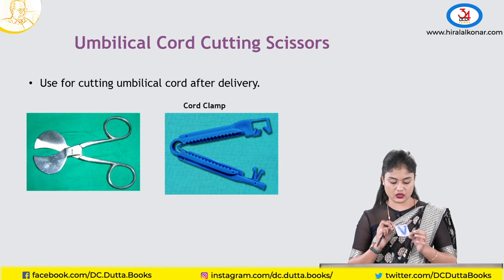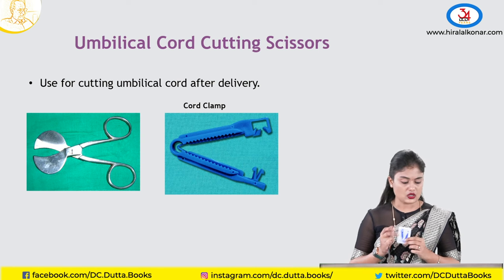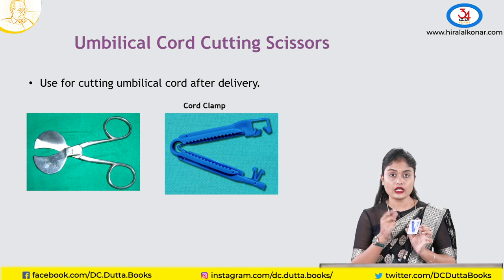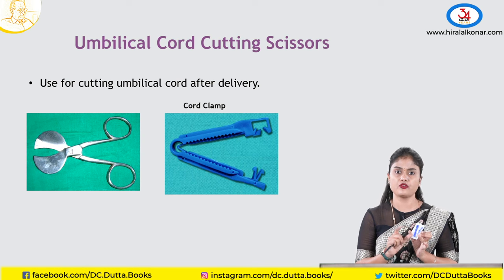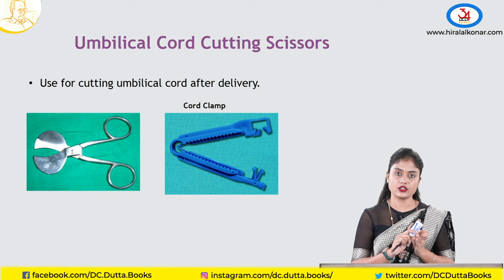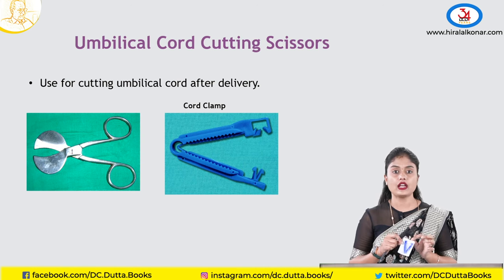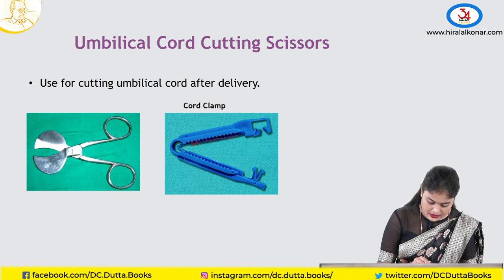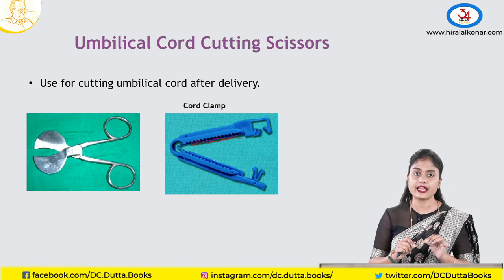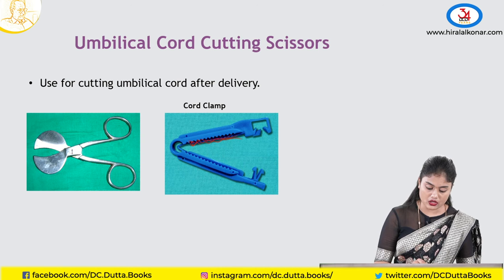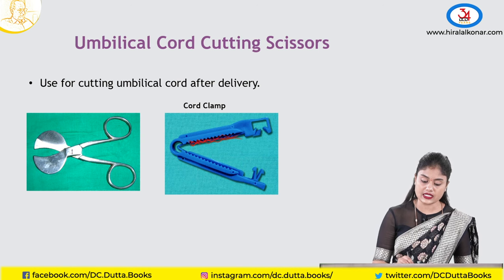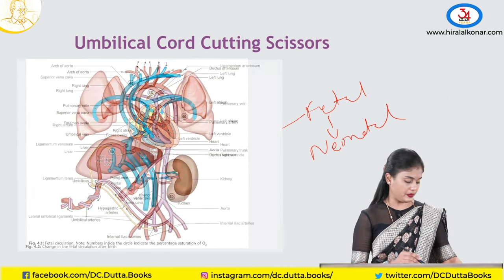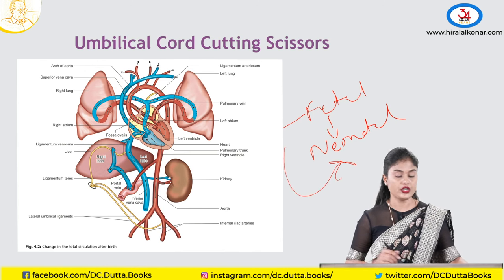Coming to the umbilical cord clamp. The cord is clamped at the fetal end, about 4 centimeters away from the baby's body, and left until the umbilicus drops away. You can see the serrations on the clamp — these ragged edges help crush the umbilical vessels better than a normal clamp, helping convert from fetal to neonatal circulation.